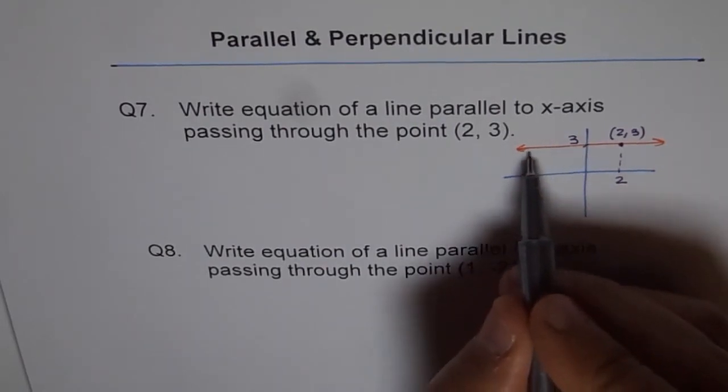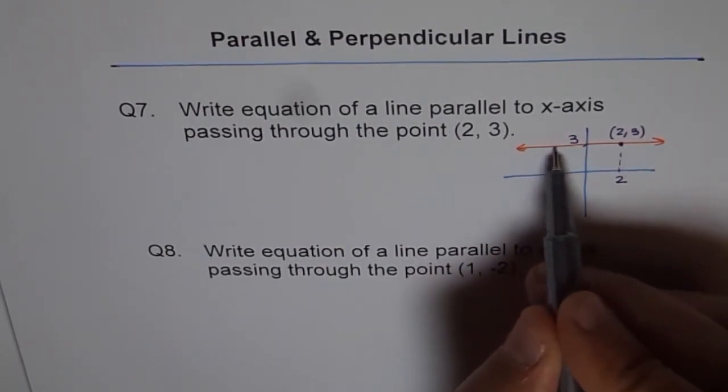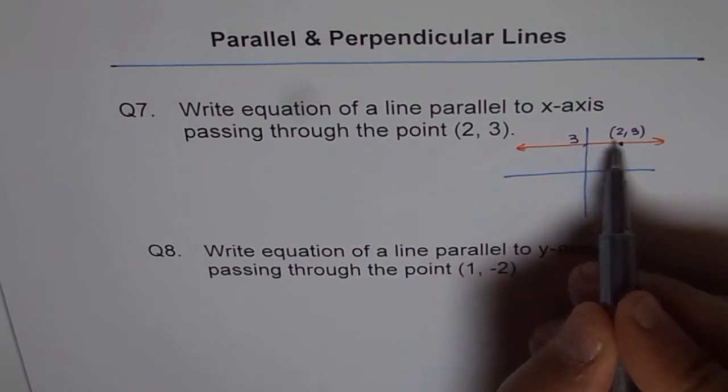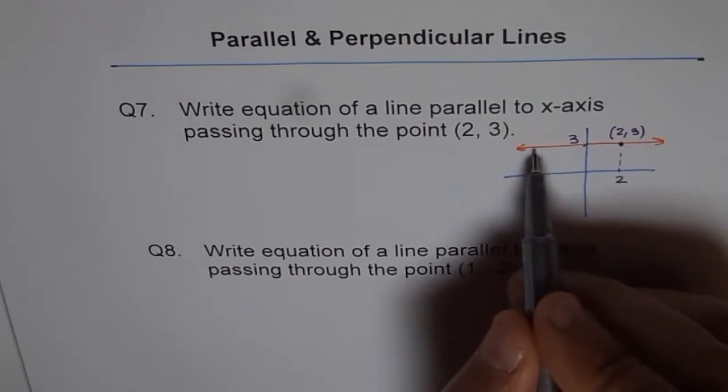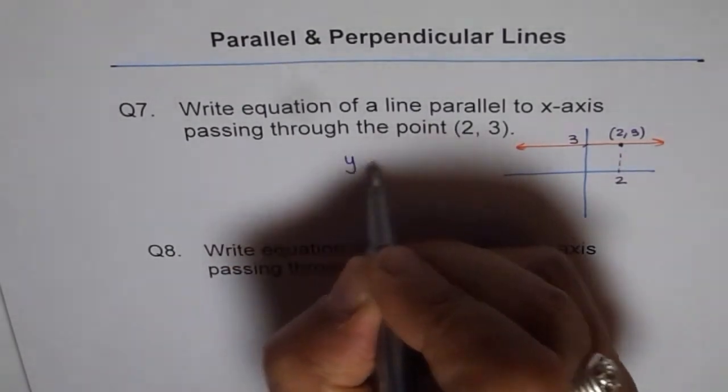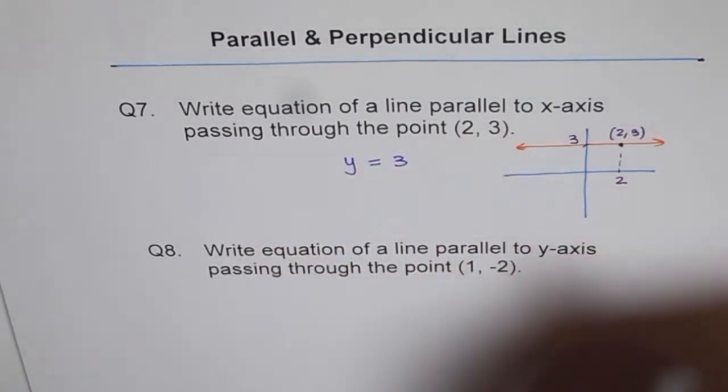As you can see on this line, y values always 3, 3, 3, 3. And therefore, we write this equation as y equals to 3, correct?